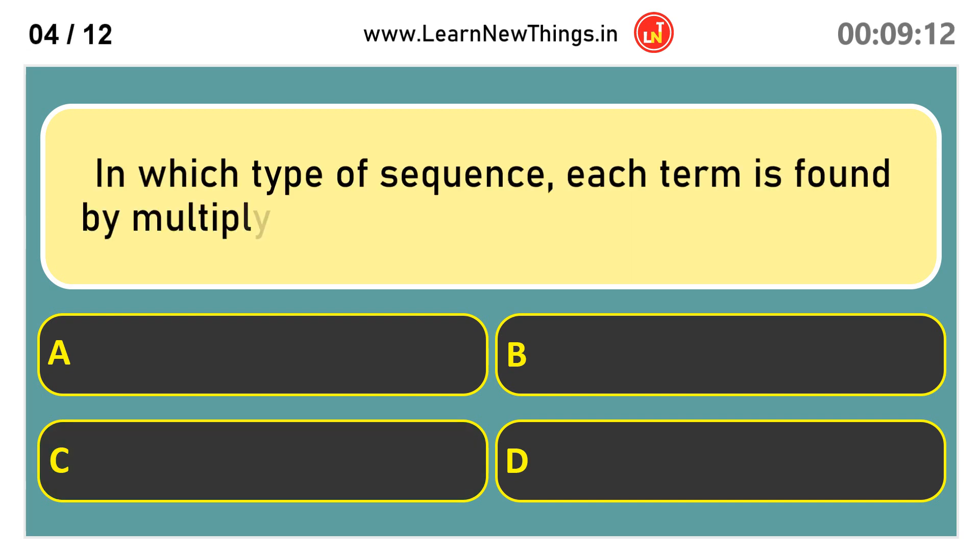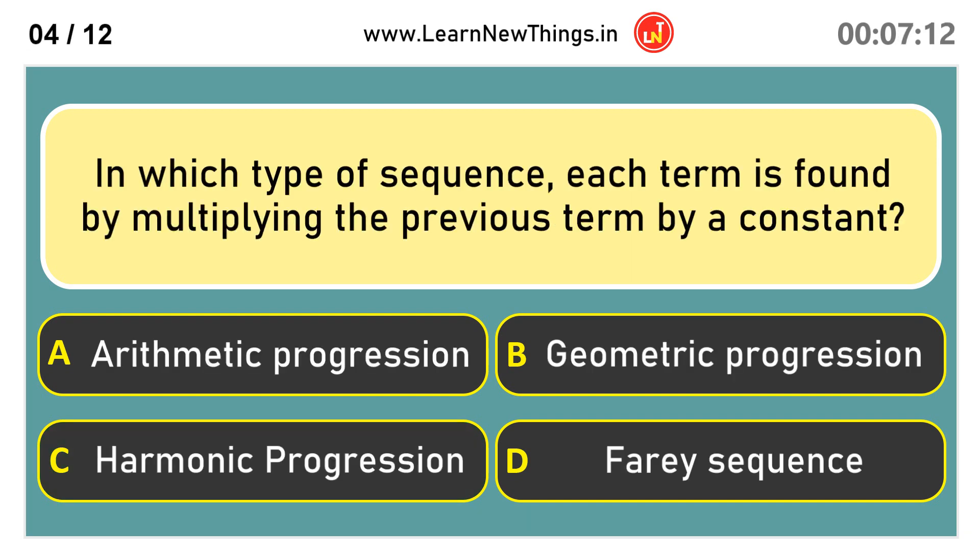In which type of sequence each term is found by multiplying the previous term by a constant? Geometric progression.